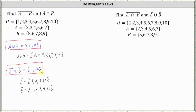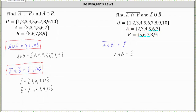Looking at our second example, let's go ahead and determine the complement of the intersection of A and B. This is the set containing the elements that are not in the intersection of A and B. To help us, let's determine A intersect B, which is the set containing the elements that are in A and in B. Analyzing sets A and B, notice the elements 5, 6, and 7 are in both set A and set B, so A intersect B equals {5, 6, 7}.